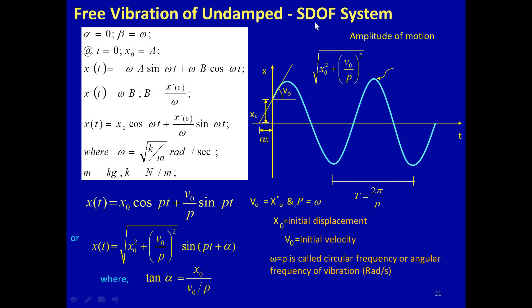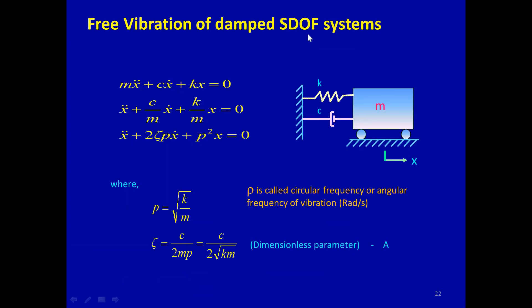For free vibration of an undamped single degree of freedom system, we set α = 0 and β = ω. A graph can be plotted with time t on the x-axis and displacement x on the y-axis to obtain the time versus displacement relationship and calculate x(t). Note that this detailed derivation is not part of your syllabus — only the basic formulas from this equation are required.